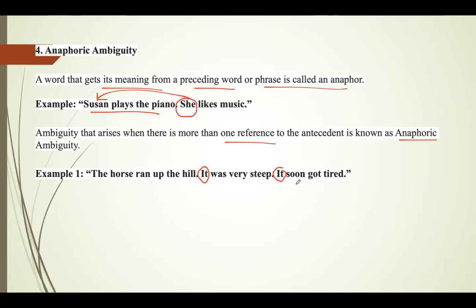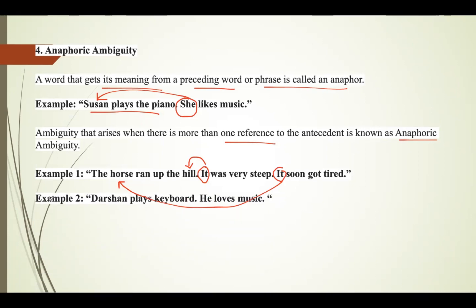The sentence becomes meaningful if the first 'it' refers to the hill (it was very steep) and the second 'it' refers to the horse (it got tired). Anaphors may not always refer to the immediately preceding sentence — they can refer to earlier sentences or even within the same sentence. Another example: 'Darshan plays keyboard; he loves music' — here 'he' refers to Darshan.